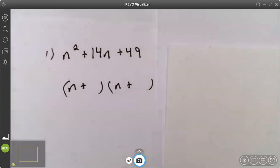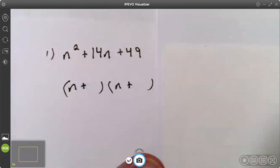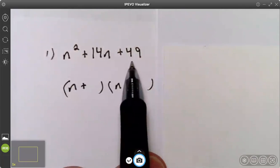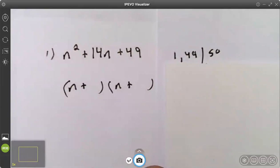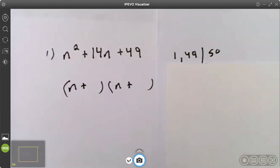Here I have a trinomial. Leading coefficient is one. This tells me my signs are the same. This tells me they're both positive, so I go through the numbers that multiply together to give me 49 and I'm trying to find two that add together to give me 14.